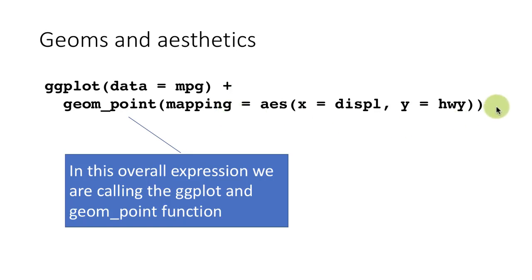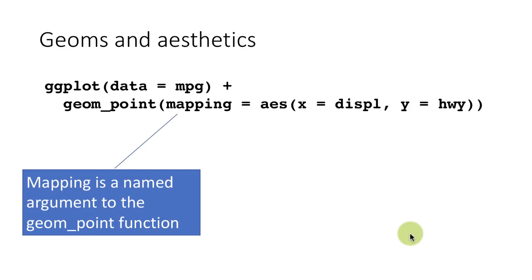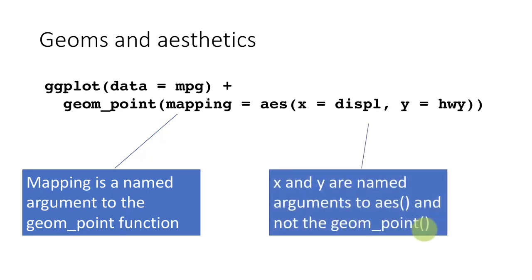To construct the mapping, we also call the aesthetic or AES function. The result of the AES function is passed as the mapping argument to geom_point. The ggplot function has one argument — the data — and the geom_point function also has one argument — the mapping. The AES function is called with two arguments: x and y, which are x equals displacement and y equals highway. Data is the named argument to the ggplot function, and x and y are named arguments to the AES function.